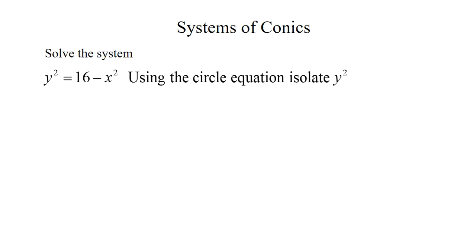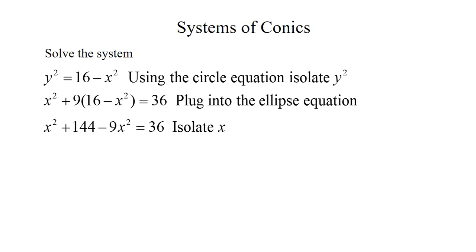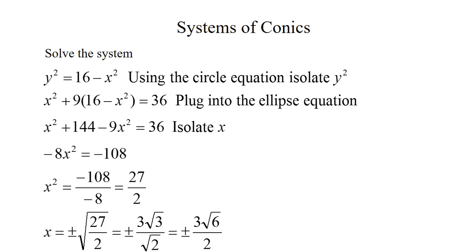Now in the second equation, we had a y². So we're going to replace that with 16 - x². Then we're just going to solve for x. So we're going to distribute the 9 and combine like terms. So we get -8x² = -108.